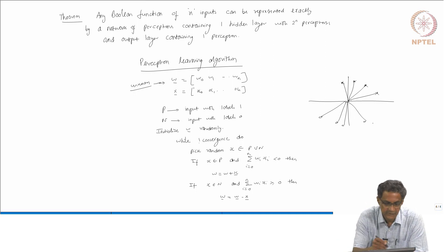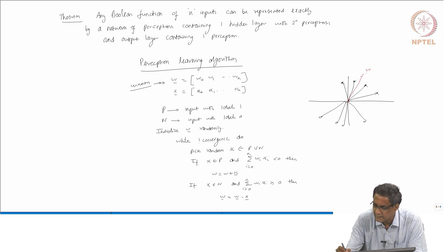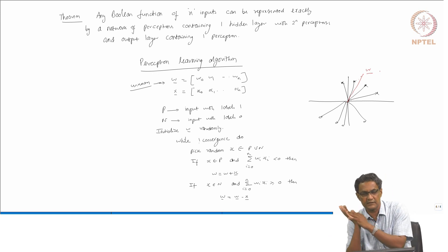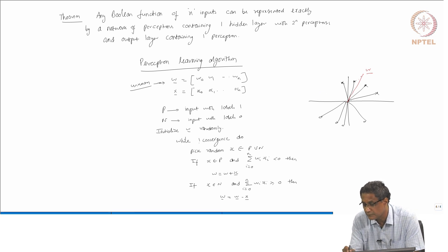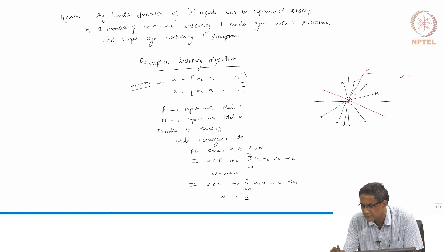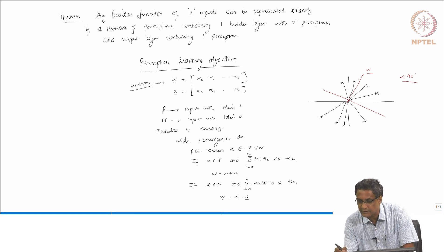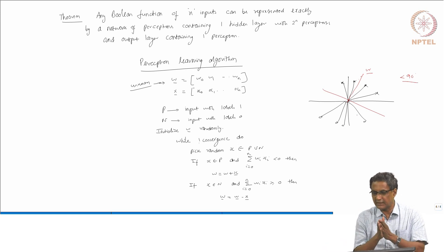What you would like is a W such that it makes an angle less than 90 degrees with respect to all the positive examples, and the negative examples on the other side. Geometrically, you are trying to align W so that the line for which W transpose X equals 0 correctly separates positives from negatives.